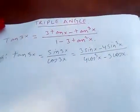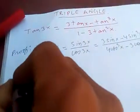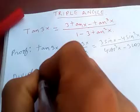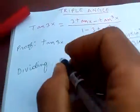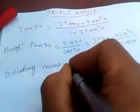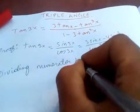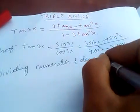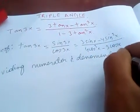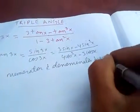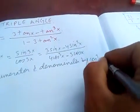Now, dividing the numerator and denominator by cos³x.